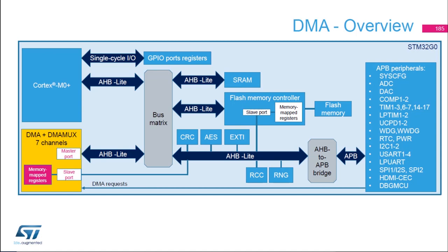The DMA channels can access any memory-mapped location, including AHB peripherals like CRC, AHB memories like the SRAM, or APB peripherals like the USART.